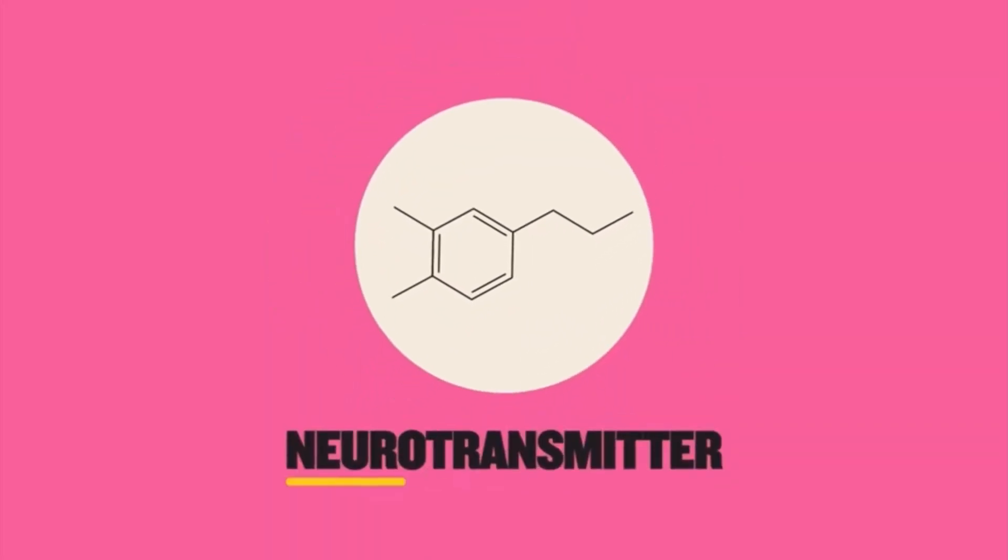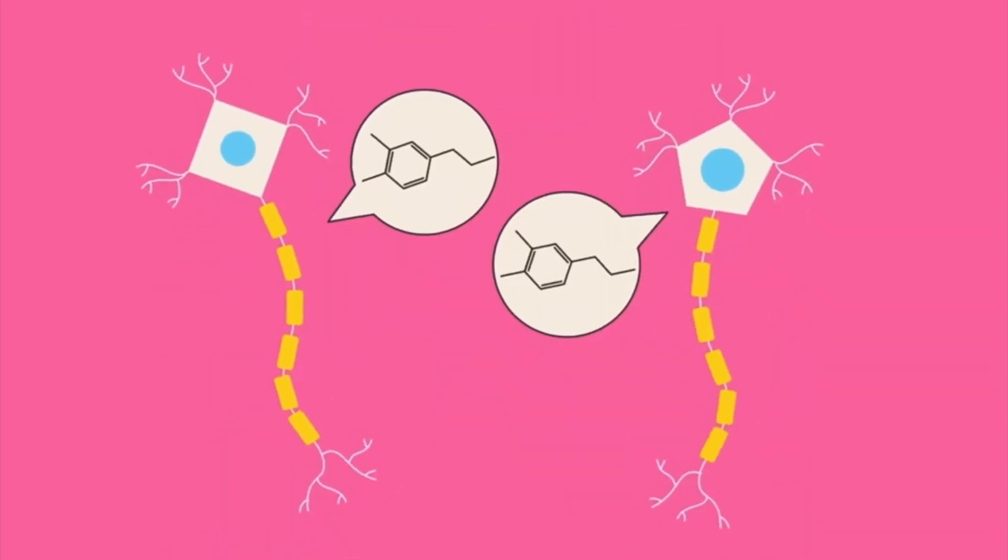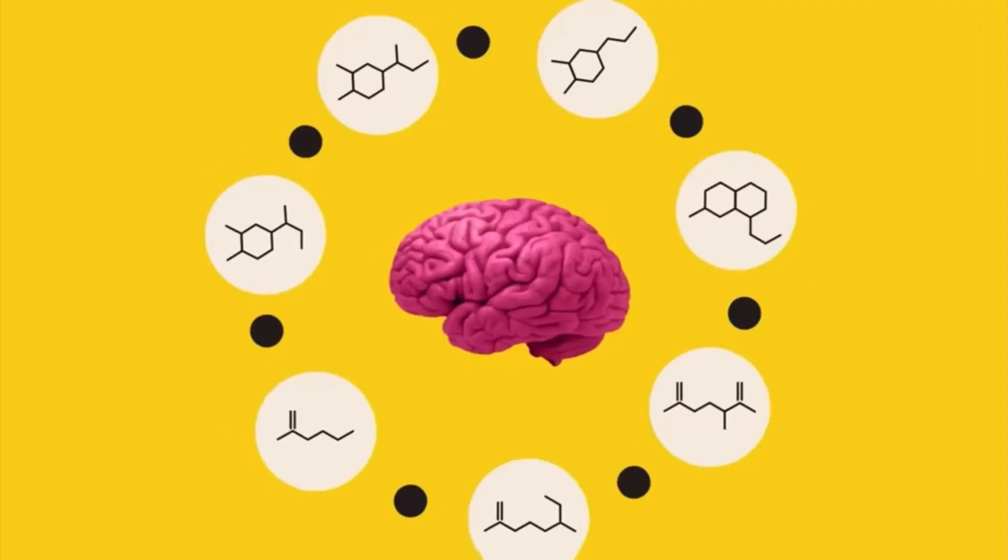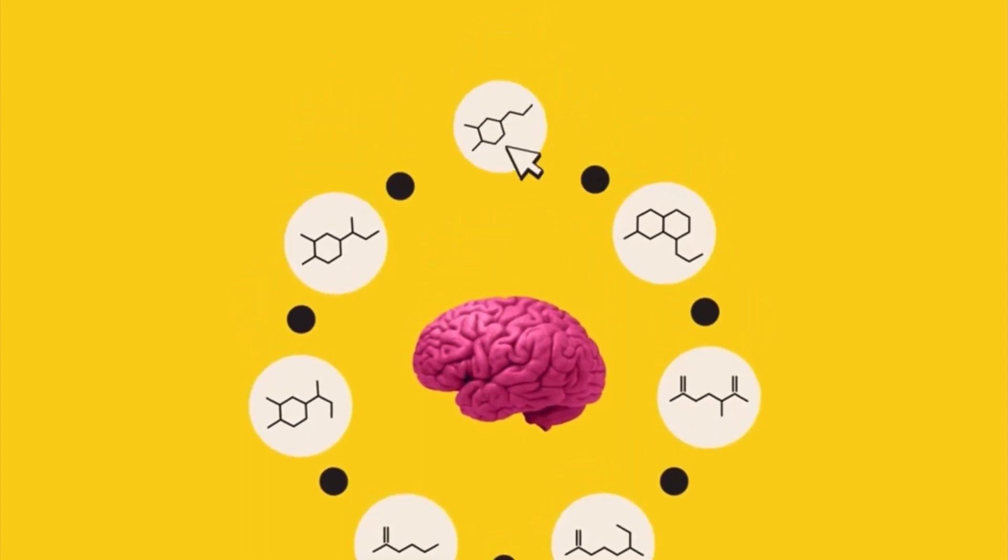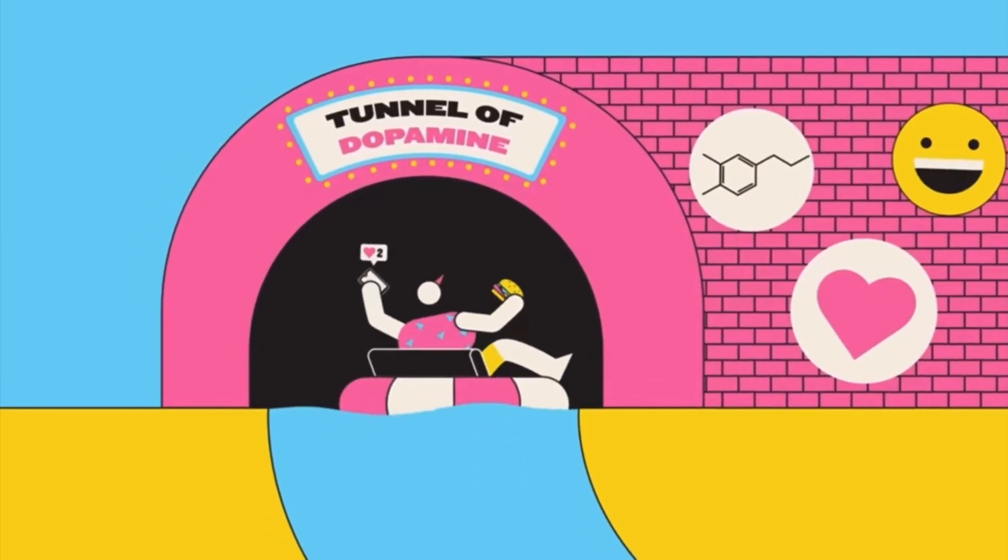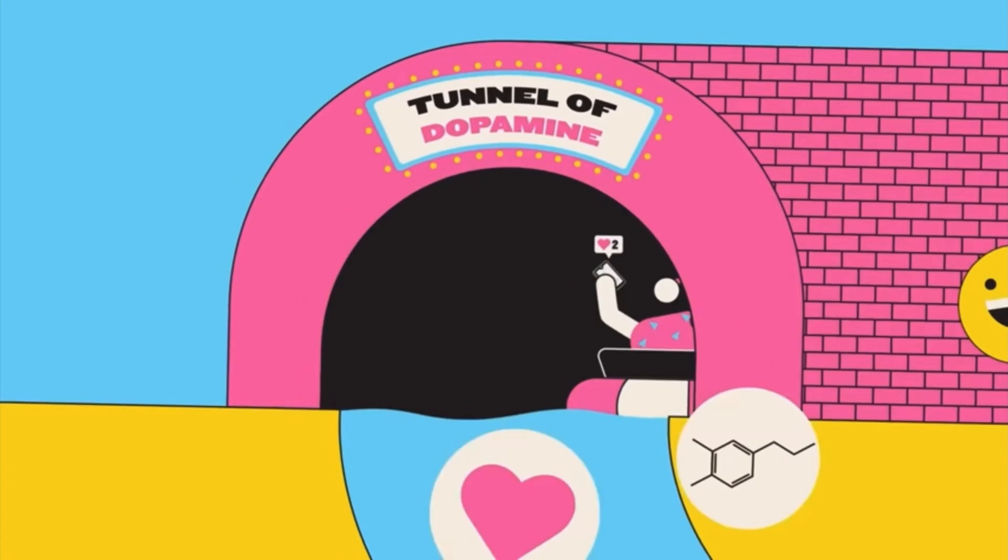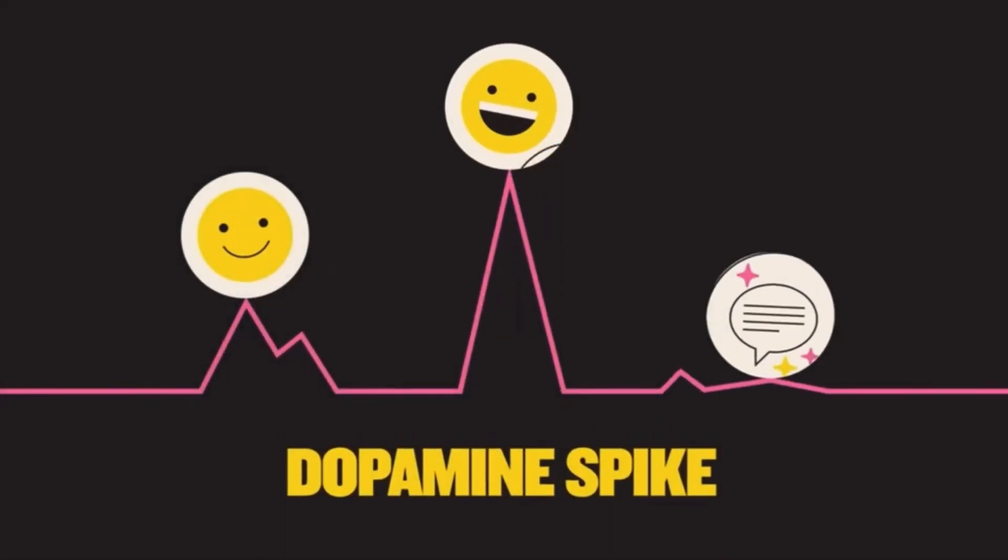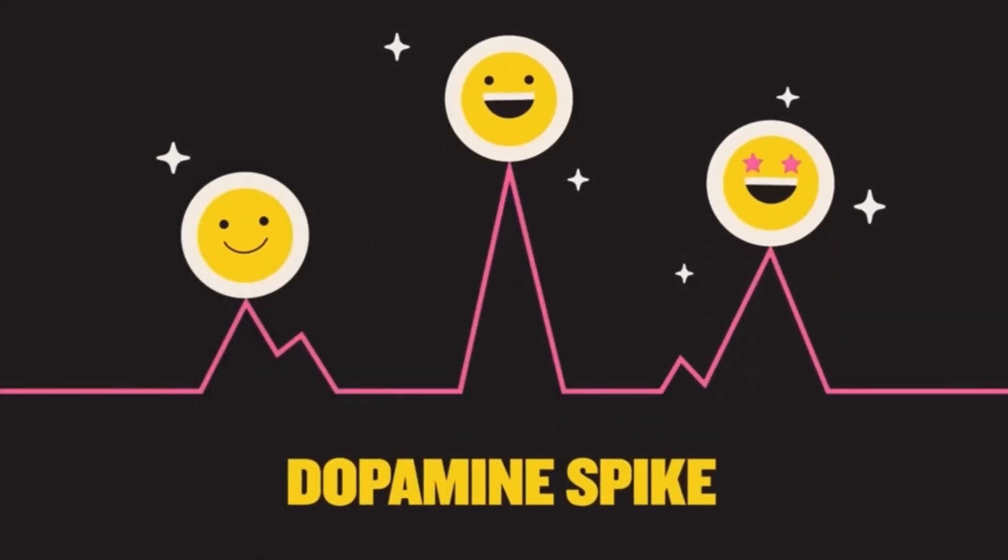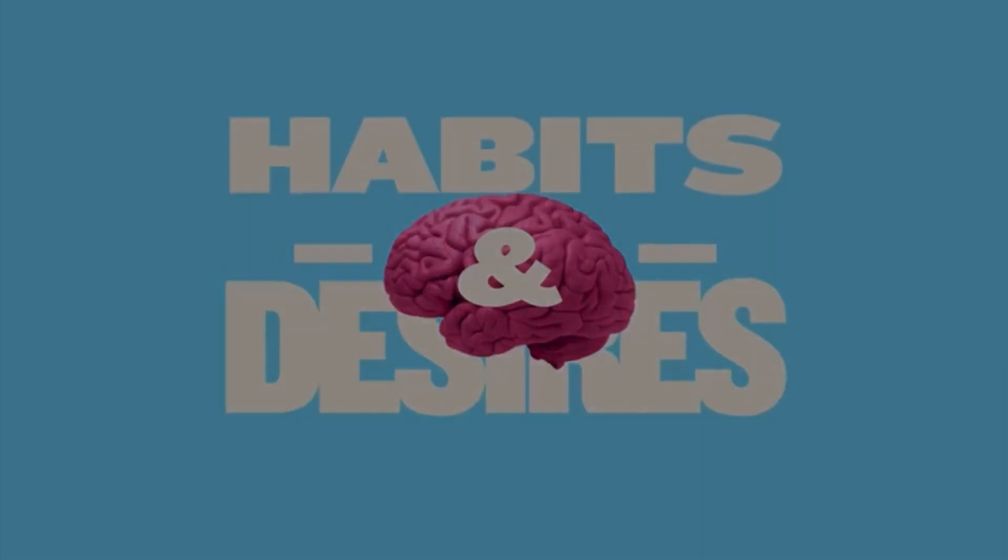Dopamine is a neurotransmitter, a chemical certain brain cells use to communicate with each other. The brain has dozens of these, but dopamine plays a special role in motivating our behavior. Simply because an experience causes a dopamine spike, it builds positive associations and shapes our habits and desires.